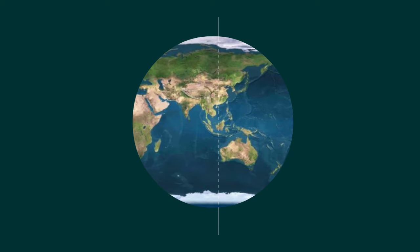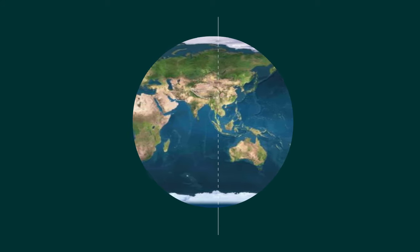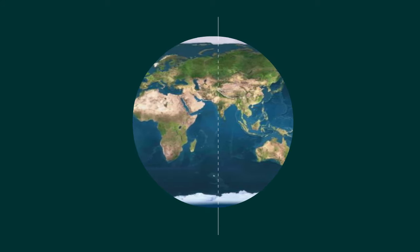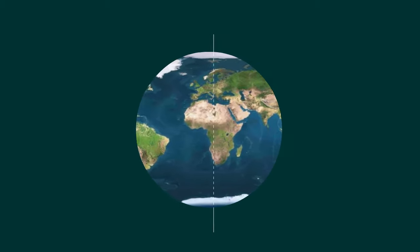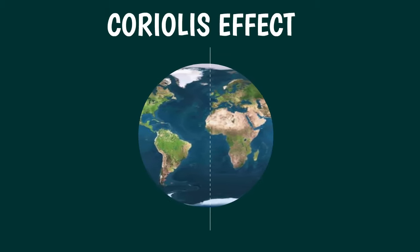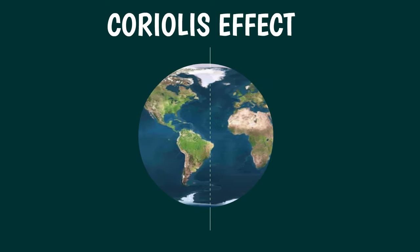In addition, we have not yet taken into consideration the fact that the earth rotates on its axis. This strongly impacts atmospheric circulation due to a phenomenon called the Coriolis effect. Let's see what that is.